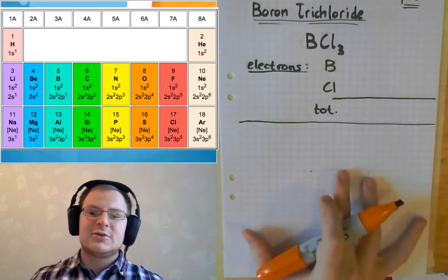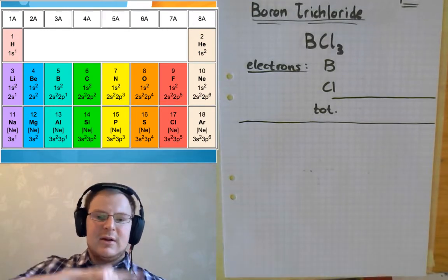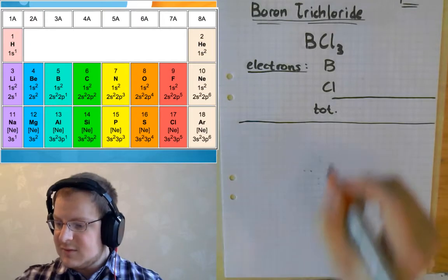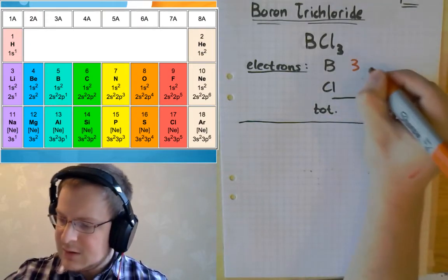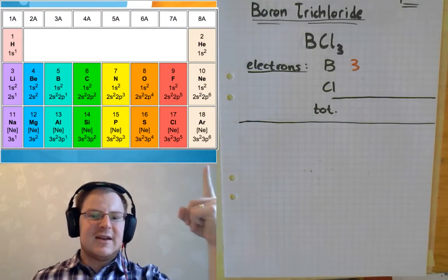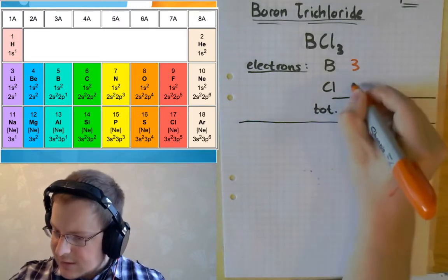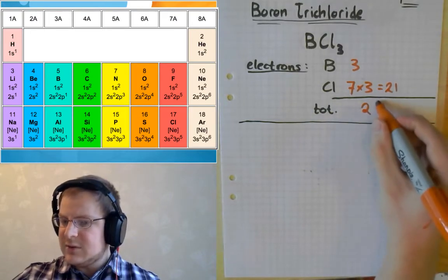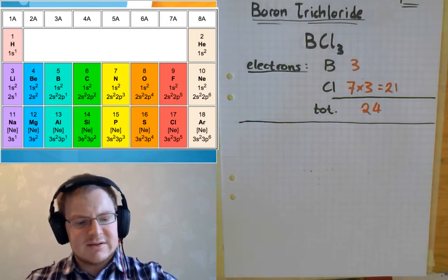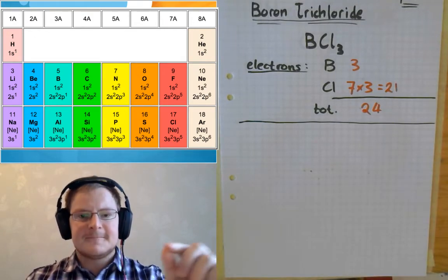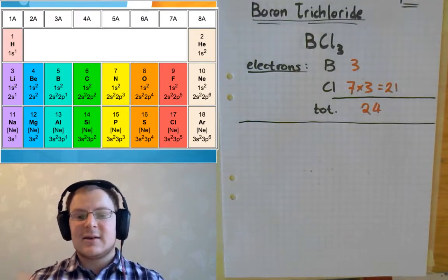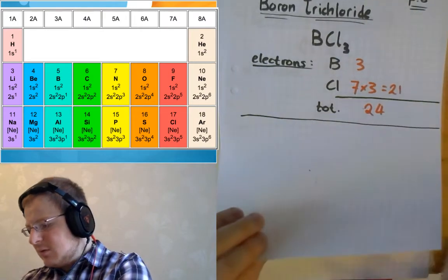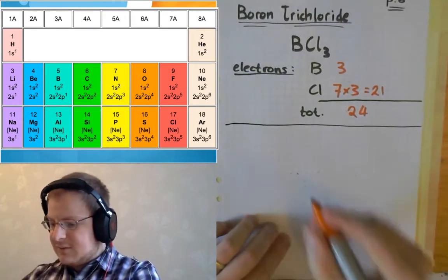Similarly, we can draw boron trichloride. Boron is in column 3A on the periodic table, which means it is contributing three valence electrons to the total. Chlorine is in column 7A, which means it is contributing seven electrons to the total; multiplied by three that is 21. So the total number of electrons we're going to have to deal with is 24. When we draw our bonds, that is not going to account for all of our electrons, but we'll start by looking at boron and figuring it out from there.